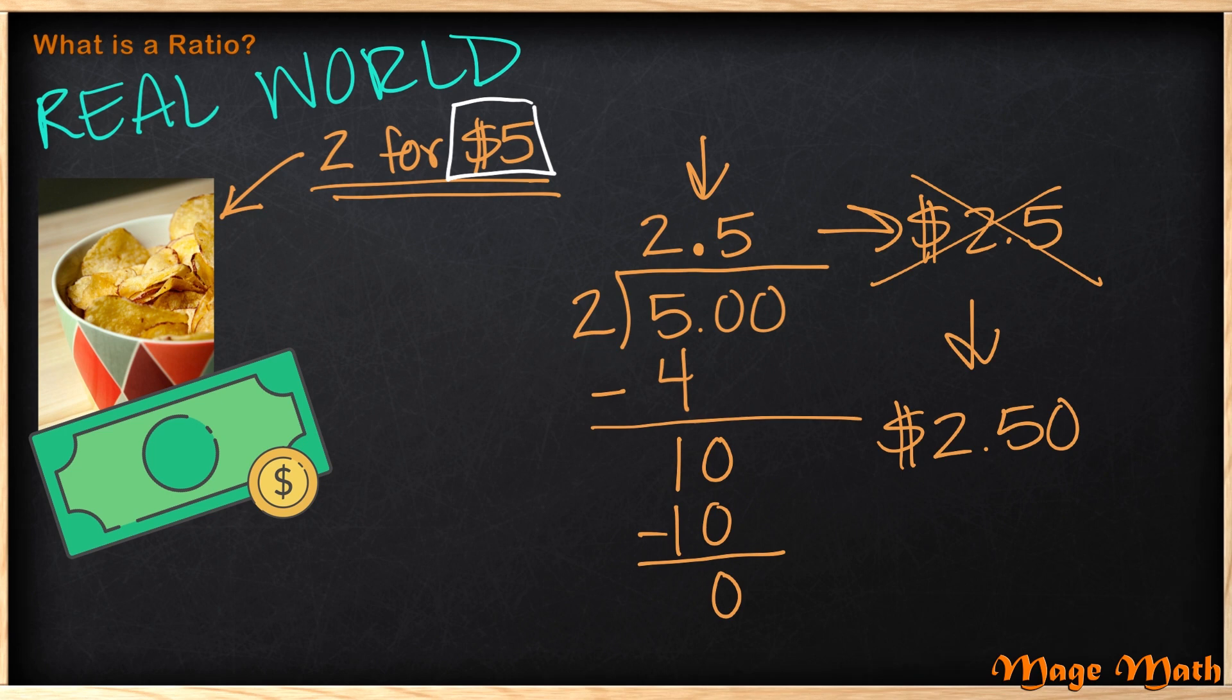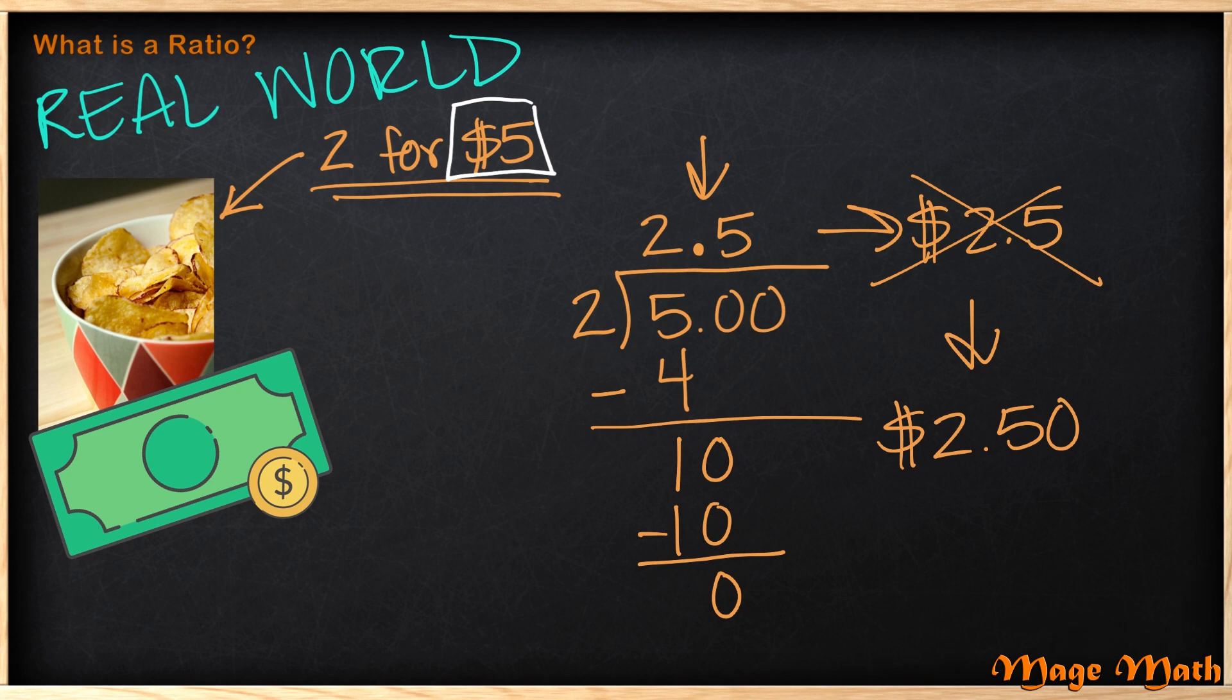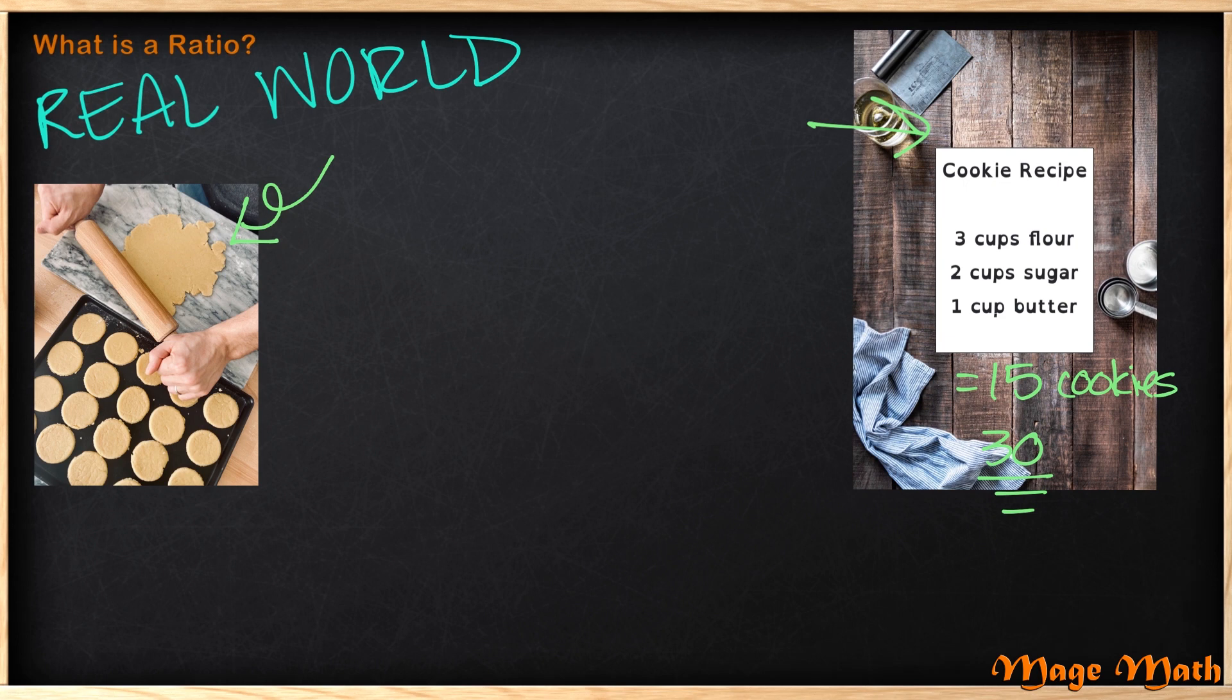Great job. Let's look at one more example, this time using recipes. Say that I want to bake some yummy shortbread cookies. Well, this recipe calls for three cups of flour, two cups sugar, and one cup of butter, and it makes 15 cookies.